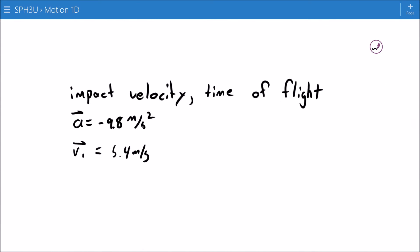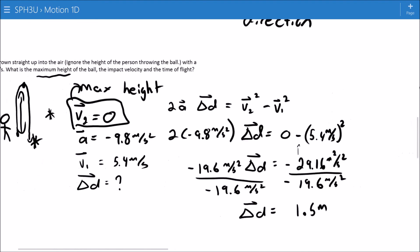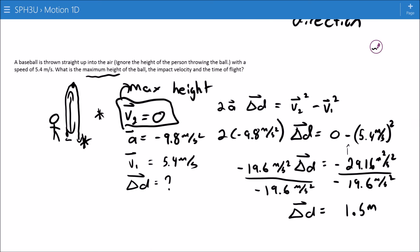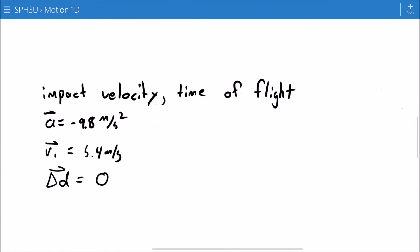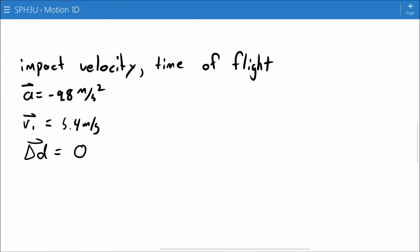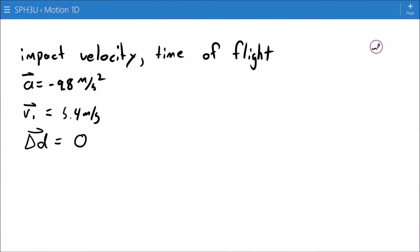What I can recognize is if it goes all the way up and comes back down, like that runner on the track from I don't know how many slides ago, the displacement is zero. Its change in position, once it gets back down to here, is zero. It's gone up and it's come back down, so there's no change in position. So I can find impact velocity and I can find time of flight.